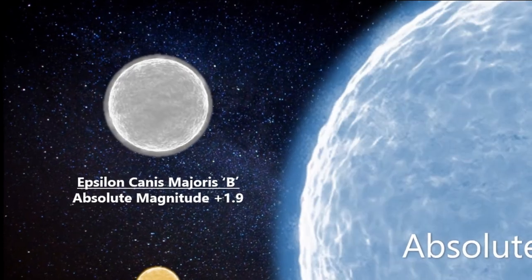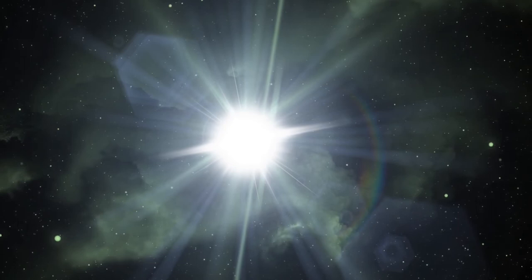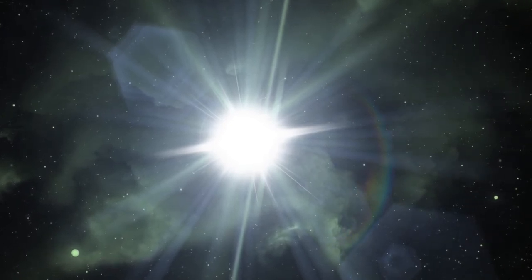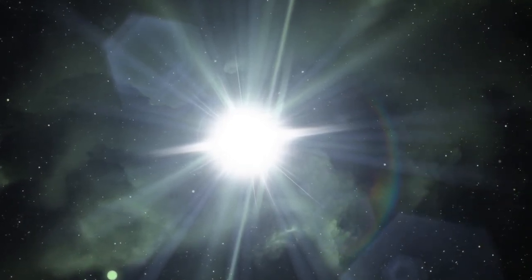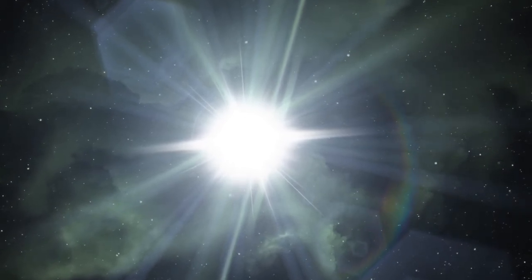I've decided that Epsilon Canis Majoris B, Adhara's partner, is most likely a higher order of A class main sequence star, substantially larger than Sirius, but a bit like the star of Vega, not quite bright enough on its own or massive enough to join the B class, at a best guess of course.